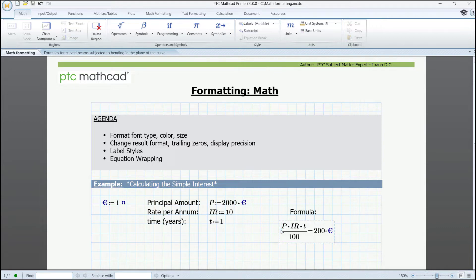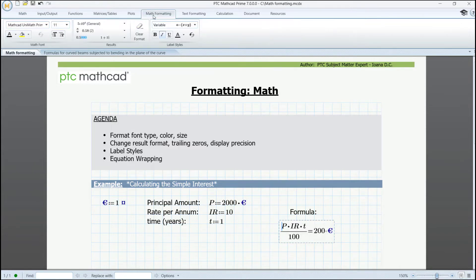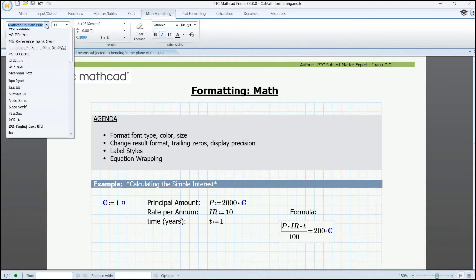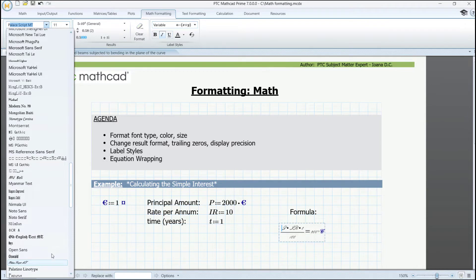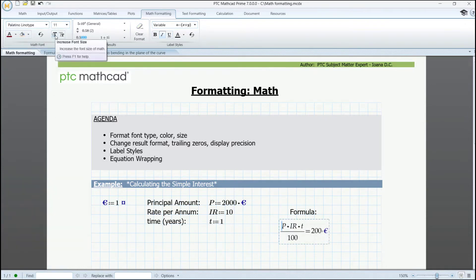To this purpose, we switch to the math formatting tab and we add some format to our formula. We need to click on it so that Mathcad recognizes the region that we want to format. We could change the font. The font size can be increased from these two buttons or decreased, or we can add another value here, or switch to a certain value from this setup.